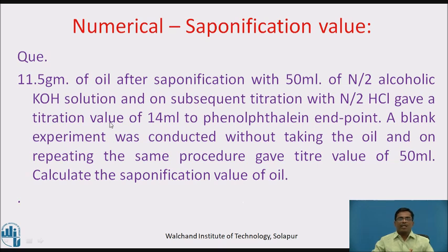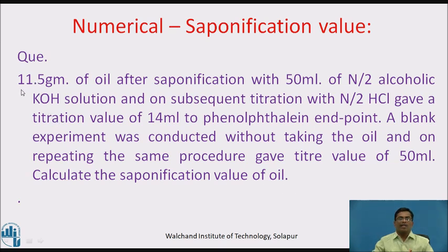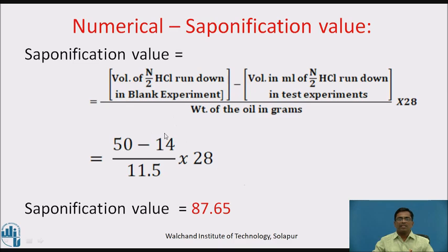Second numerical: 11.5 grams of an oil, after saponification with 50 mL of N/2 alcoholic potassium hydroxide solution and subsequent titration with N/2 HCl, gave a titration value of 14 mL to phenolphthalein endpoint. A blank experiment gave a titration value of 50 mL. Using the formula: Saponification Value = (50 − 14) ÷ 11.5 × 28. The saponification value is 87.635.